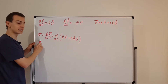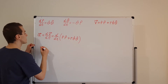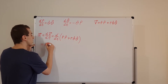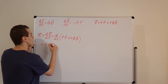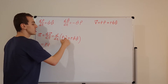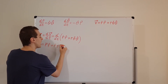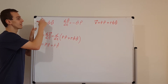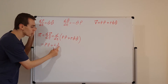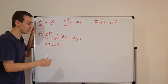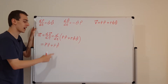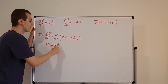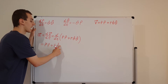This is all coming from the definition of acceleration as the time derivative of velocity. From the first term, differentiating r-dot gives us r-double-dot, leaving r-hat unchanged. Then we leave r-dot alone and differentiate r-hat, giving us r-dot times r-hat-dot, where the dot above r-hat is shorthand for its time derivative — so it represents how that unit vector is changing with respect to time.